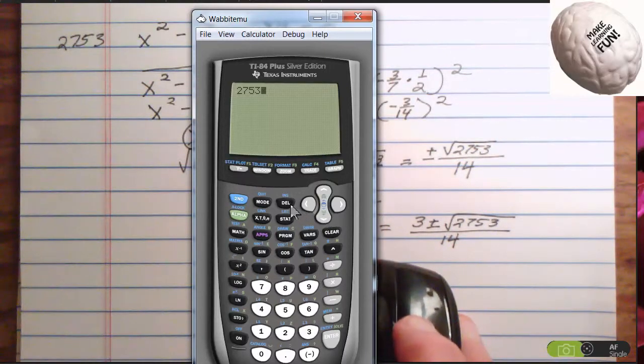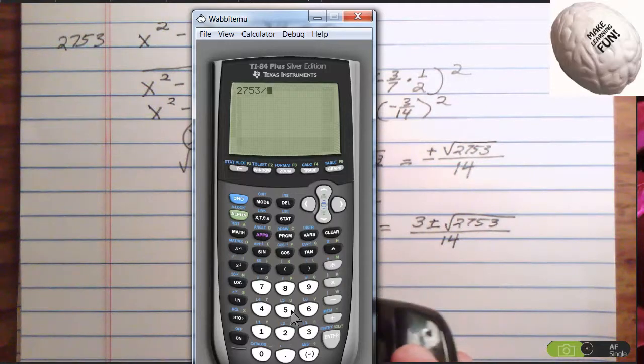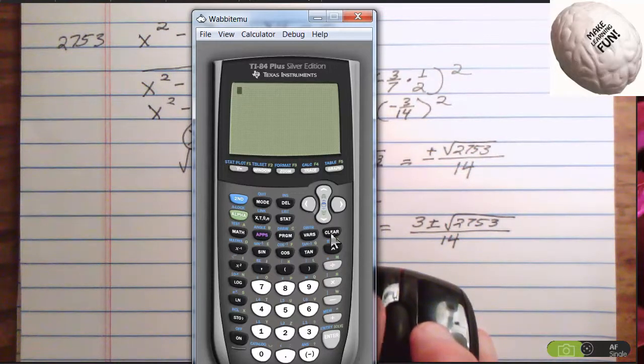Right arrow. Delete. Okay. Now divide 2753 by 7. Nope. That doesn't work.